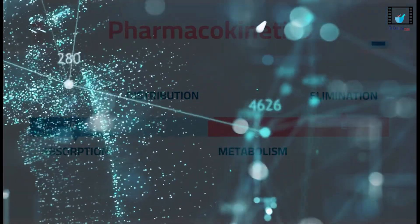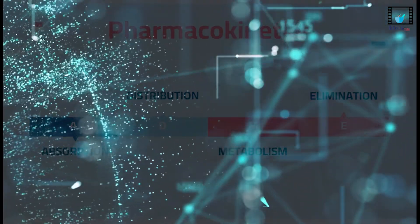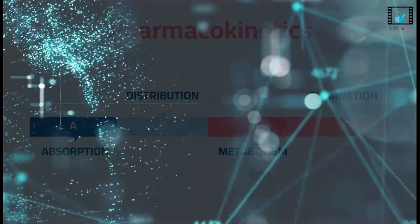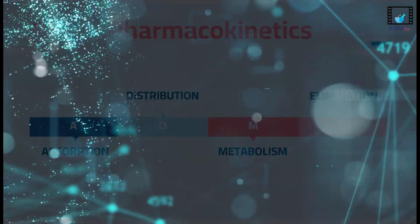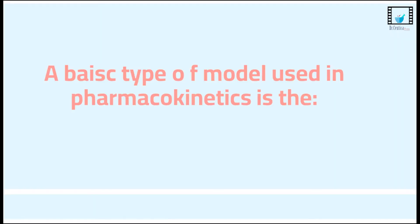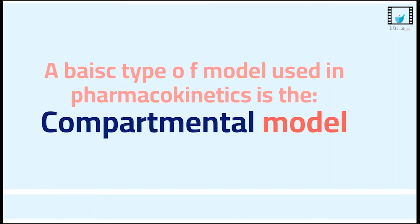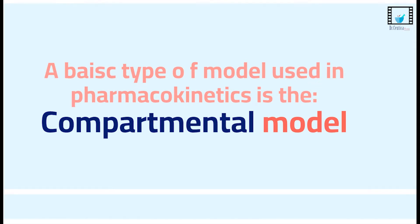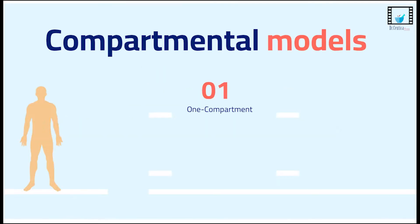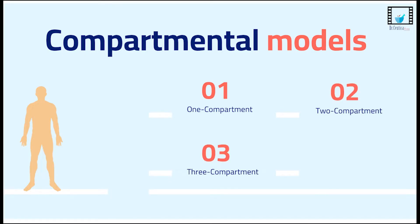Yet to apply these principles, a model of the body should be chosen. The basic type of model used in pharmacokinetics is the compartmental model. Compartmental models are classified by the number of compartments required to describe the drug's behavior in the body. There are one compartment, two compartment, three compartment models, and so on.